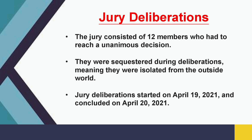Jury deliberations: the jury consisted of 12 members who had to reach a unanimous decision. They were sequestered during deliberations, meaning they were isolated from the outside world. Jury deliberations started on April 19, 2021, and concluded on April 20, 2021.